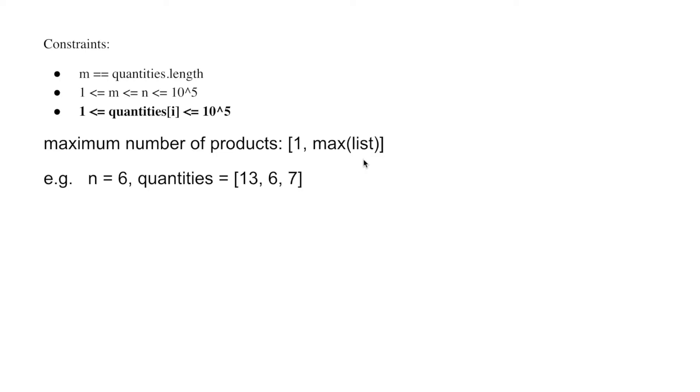More specifically, the upper limit is the maximum number in the given list. Find the number in this range. Looks like a binary search. Let's go through an example.